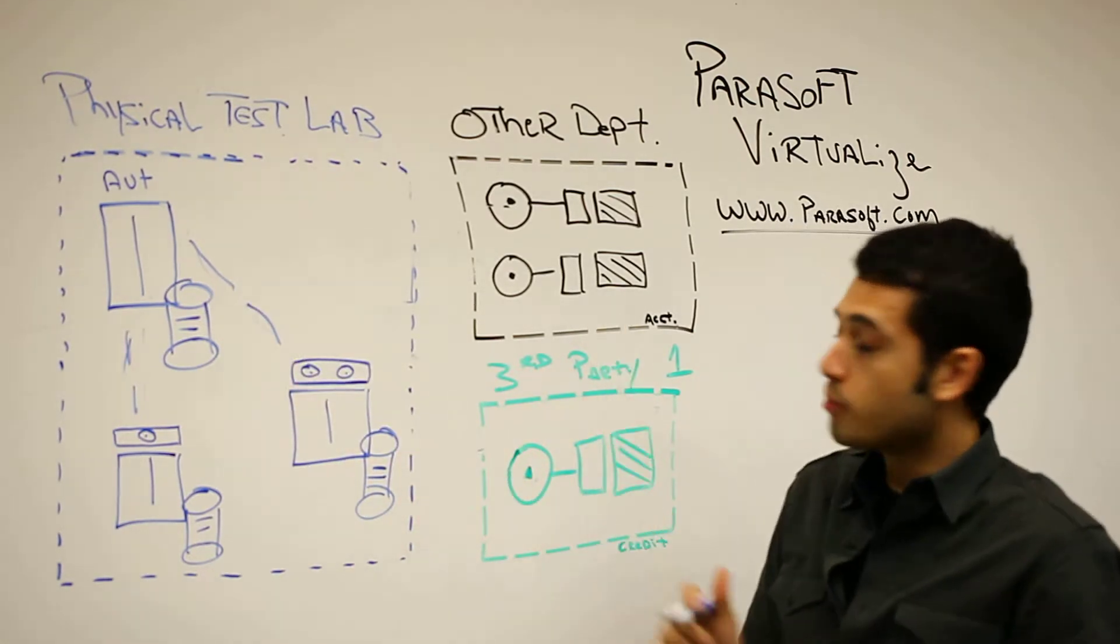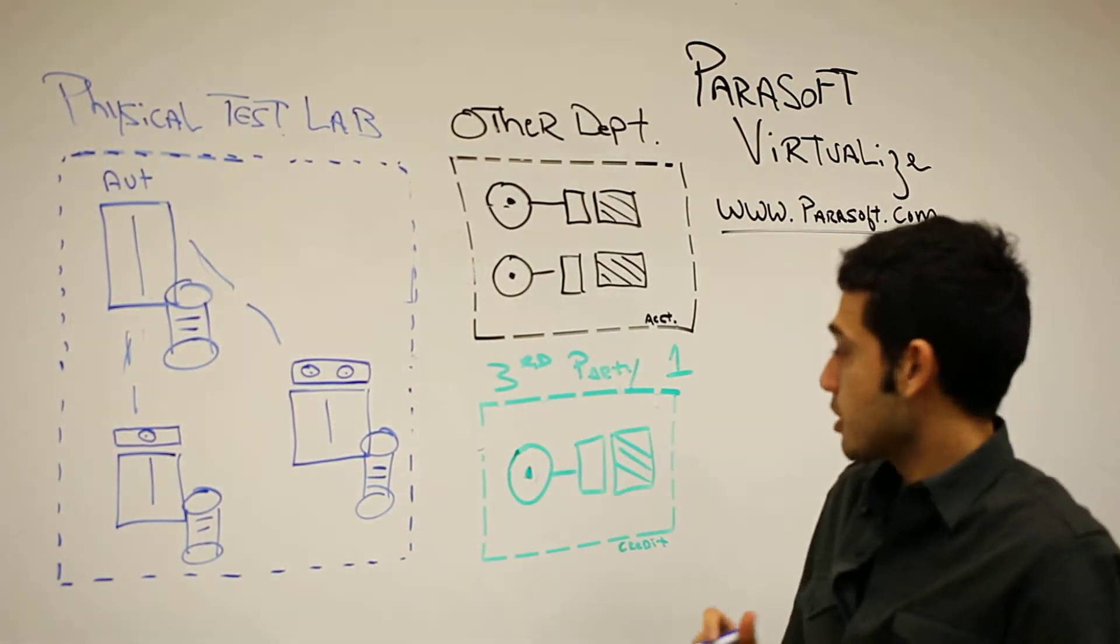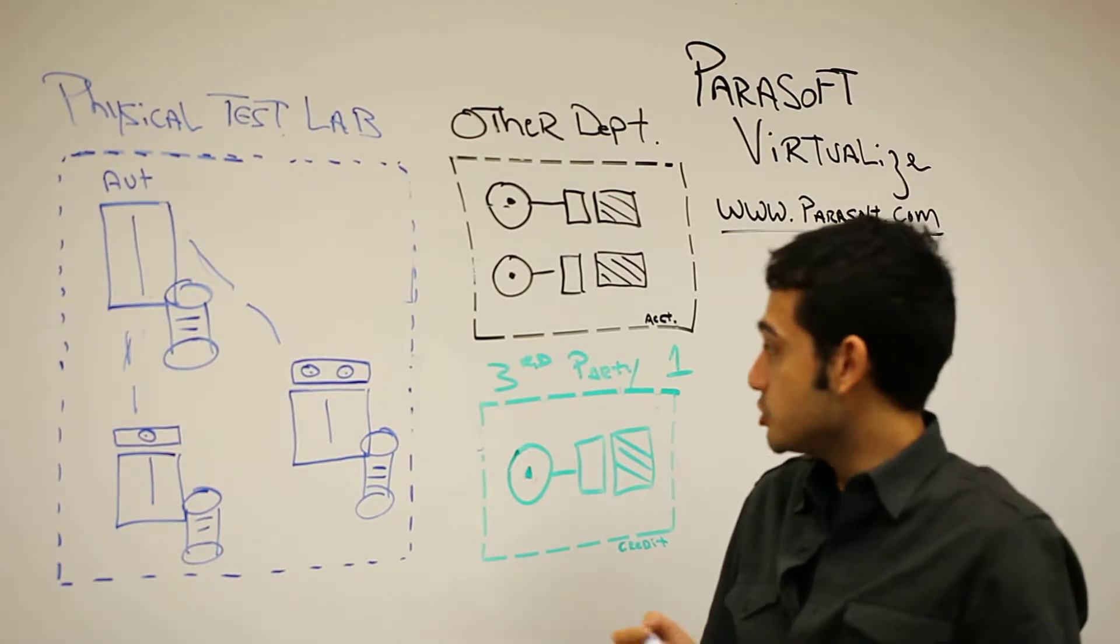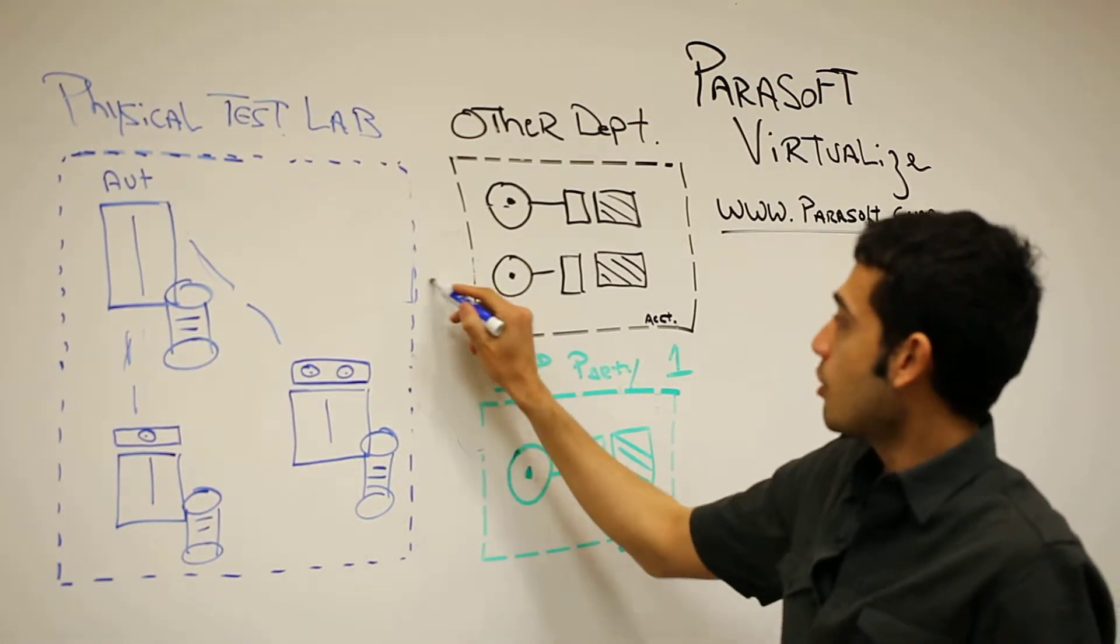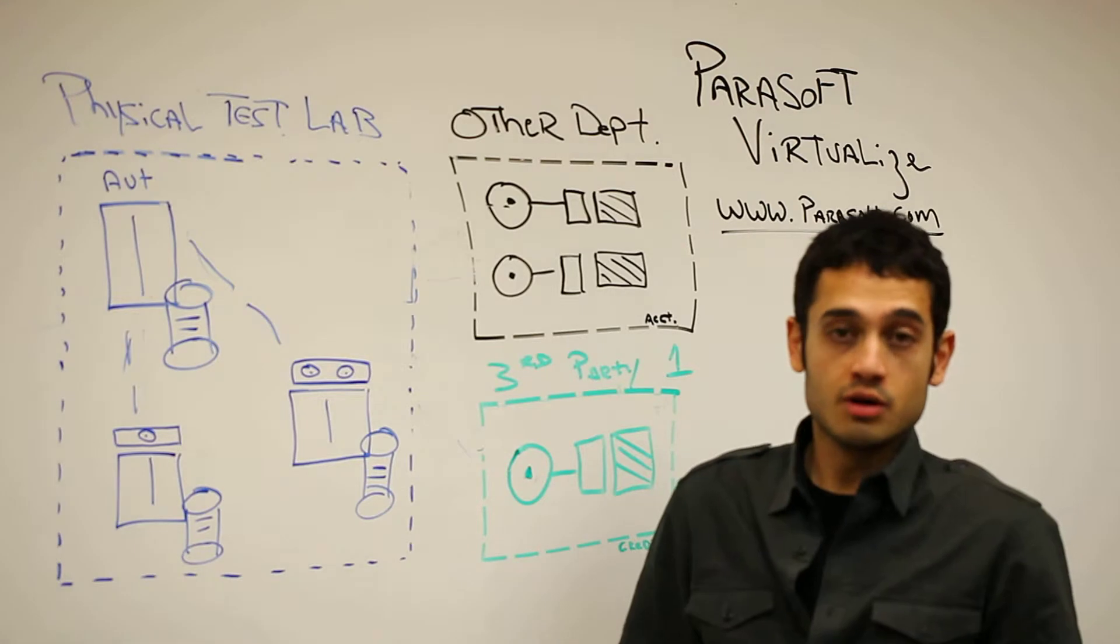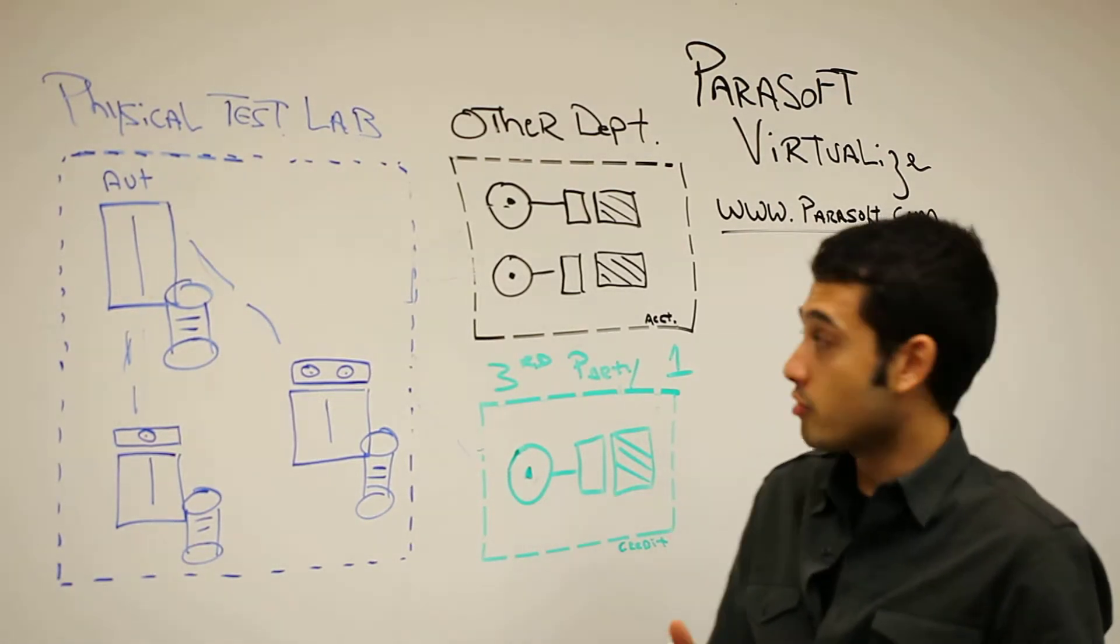We have third-party systems, other departments, credit card processing agents. These are all required as part of your test environment when you actually do the performance test.